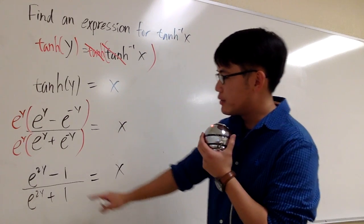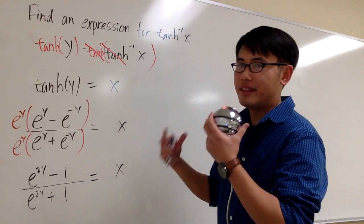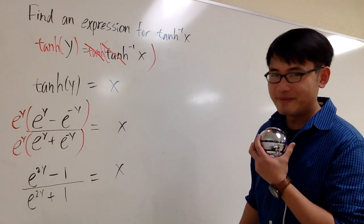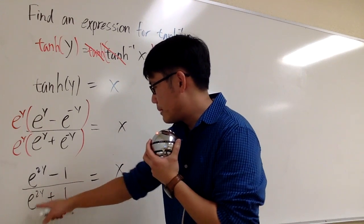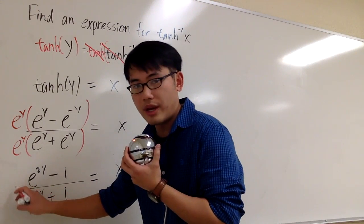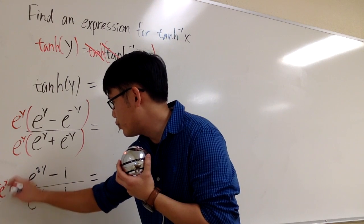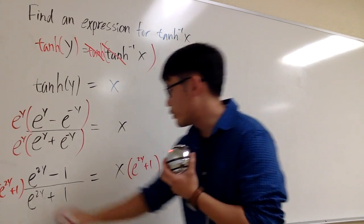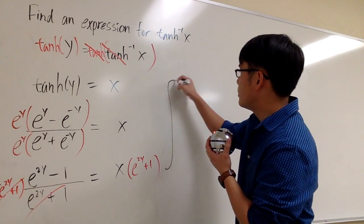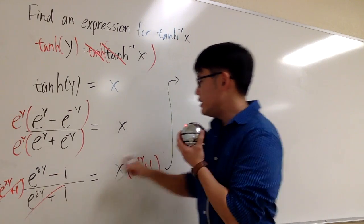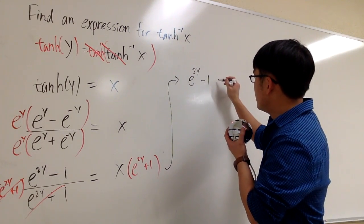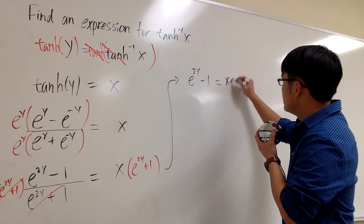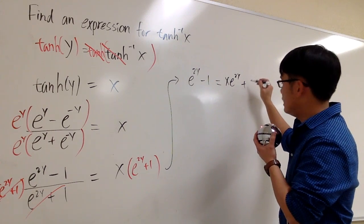My goal is to isolate y so we can get an explicit expression for the inverse hyperbolic tangent of x. Let's multiply both sides by the denominator, e to the 2y plus 1. This gives e to the 2y minus 1 equals x times (e to the 2y plus 1). Distributing the x, we get x·e to the 2y plus x.